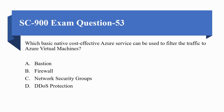Next question: which basic, native, cost-effective Azure service can be used to filter traffic to Azure virtual machines? Option A) Bastion, B) Firewall, C) Network Security Group, D) DDoS Protection. The correct option is C, Network Security Group.